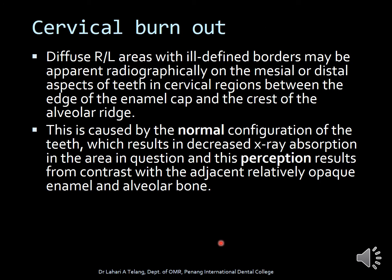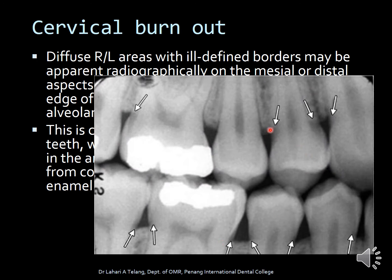There is an interesting finding called cervical bone burnout. It presents as diffuse radiolucent areas with ill-defined borders, apparent on the mesial or distal aspects of teeth in cervical areas — generally seen between the edge of the enamel cap and the crest of the alveolar ridge. This is caused by the normal configuration of teeth resulting in decreased x-ray absorption in that area, creating contrast with the adjacent radiopaque enamel and alveolar bone. The radiolucent areas seen at the cervical aspect of the teeth are not actually caries but cervical burnout — a radiographic perception due to differential absorption of x-rays.